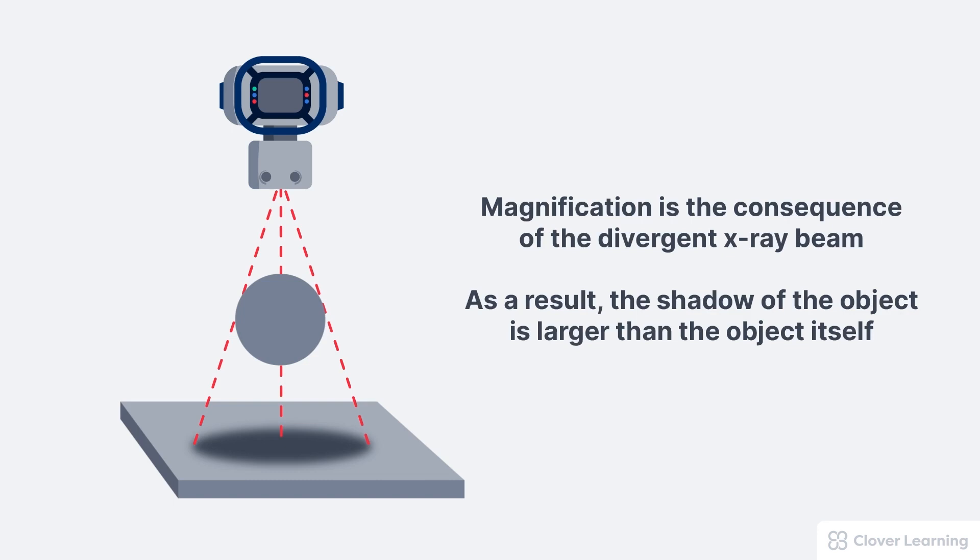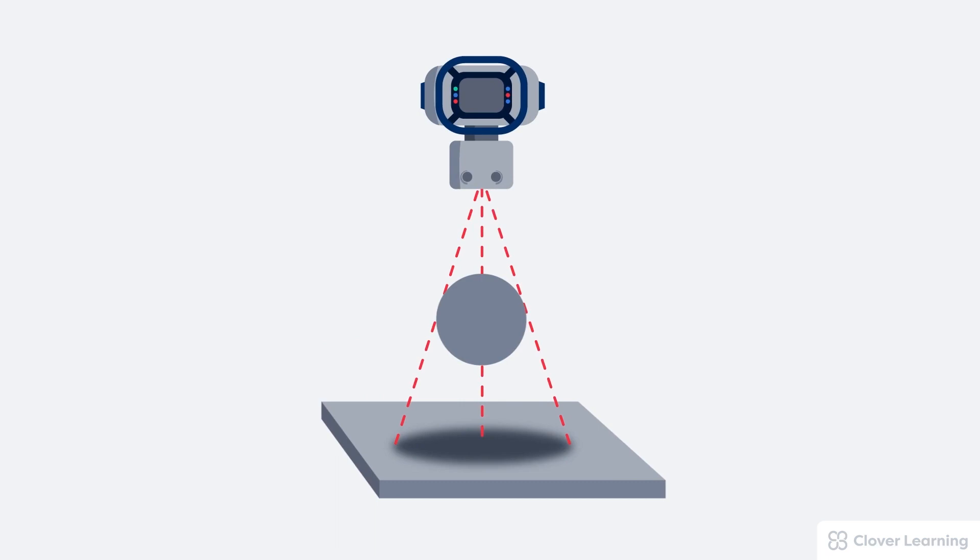The amount of magnification occurring in the image depends on the geometric factors used to create the image. The factors controlling magnification distortion are the source to image distance or SID, which refers to the distance from the x-ray tube to the image receptor.